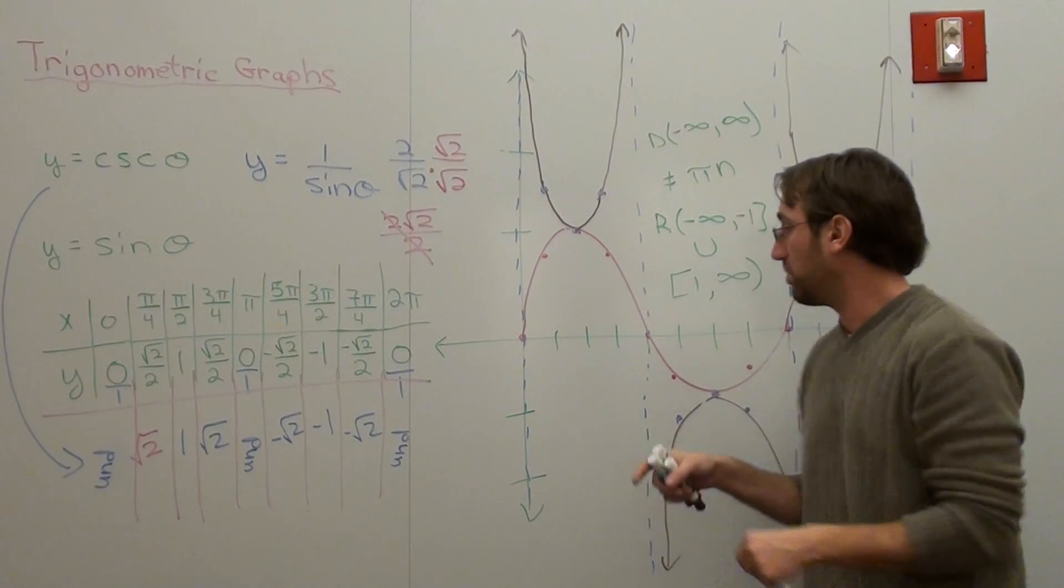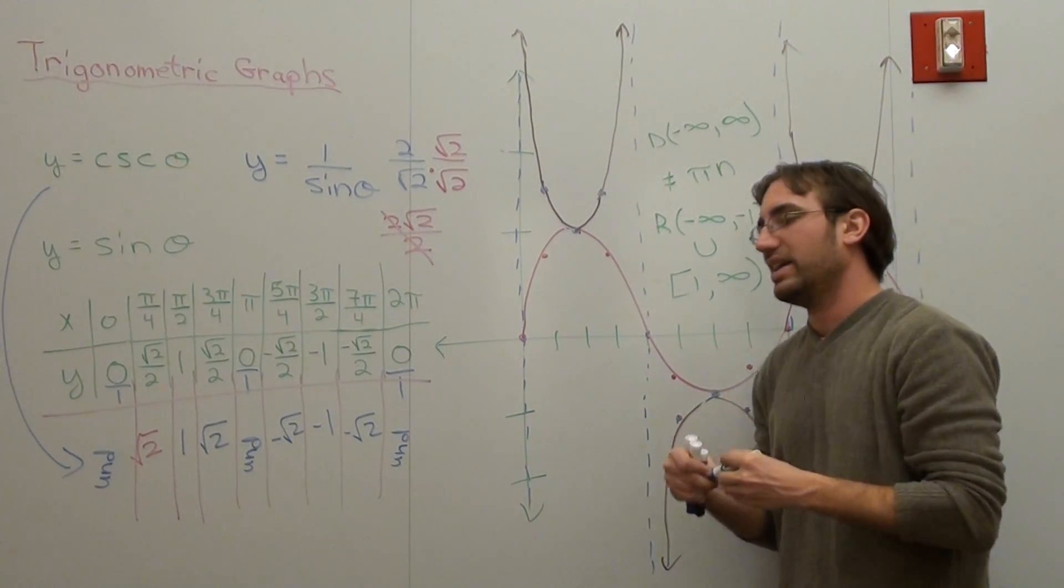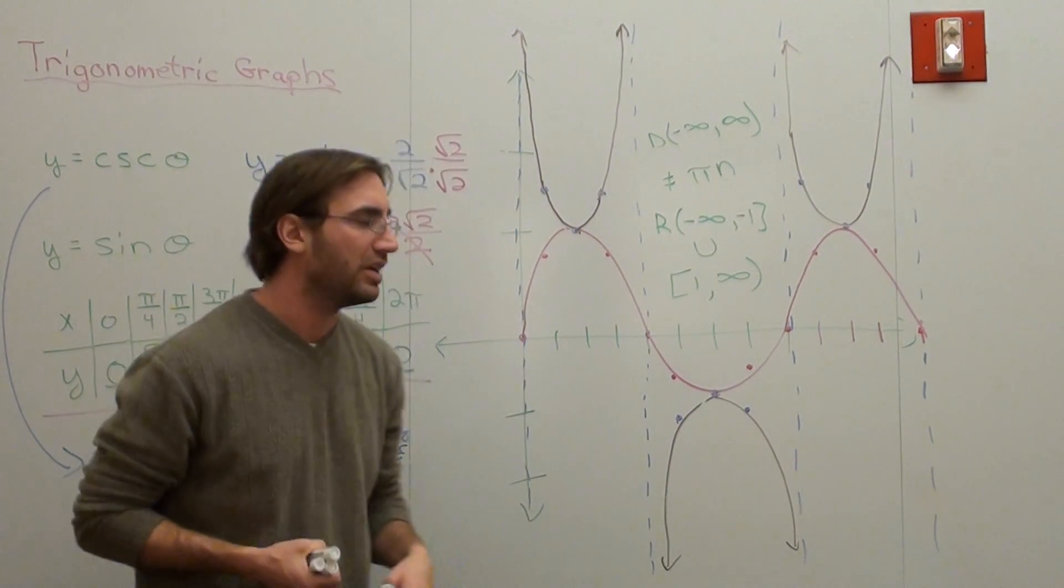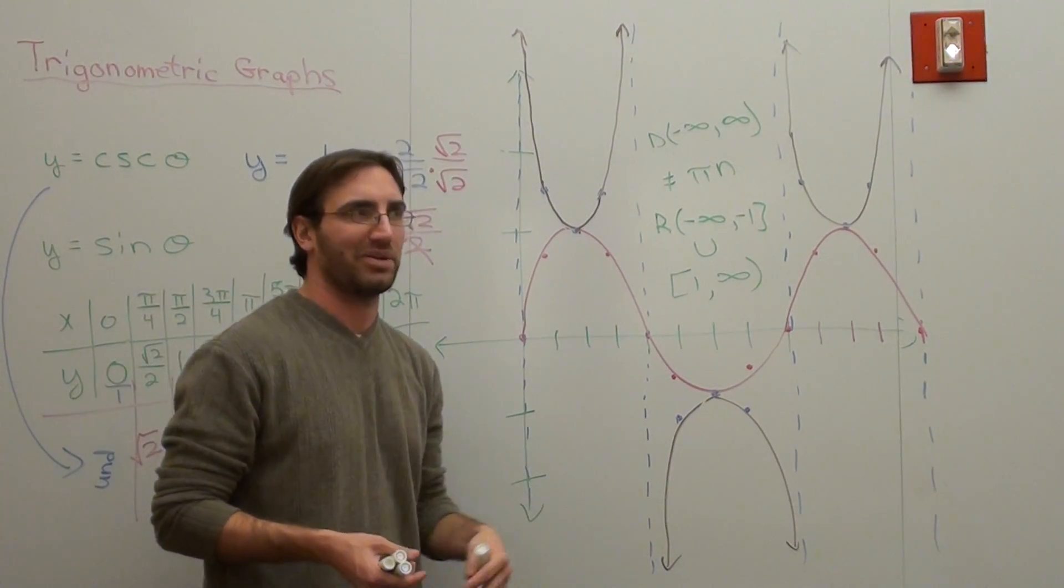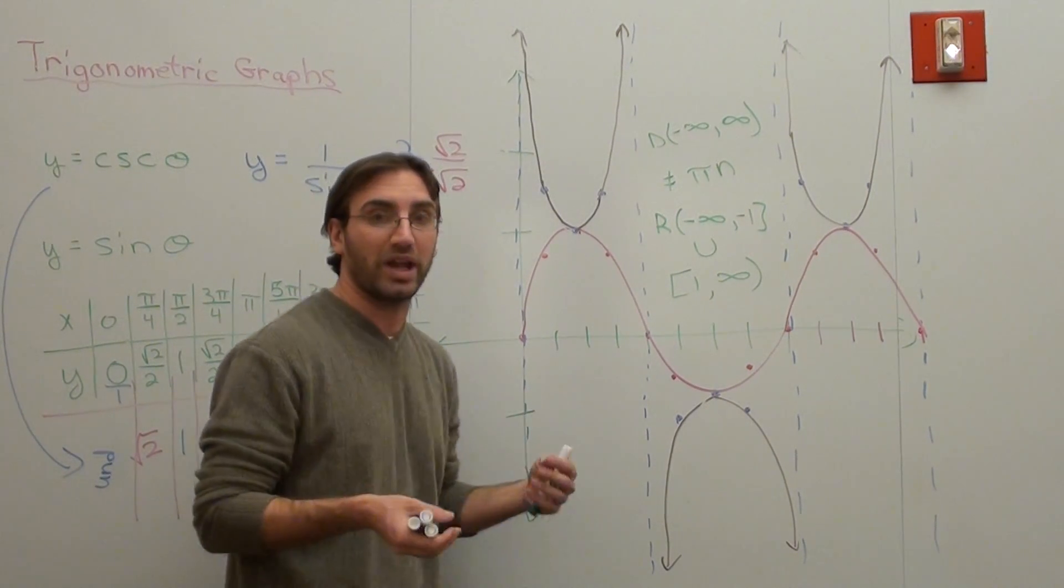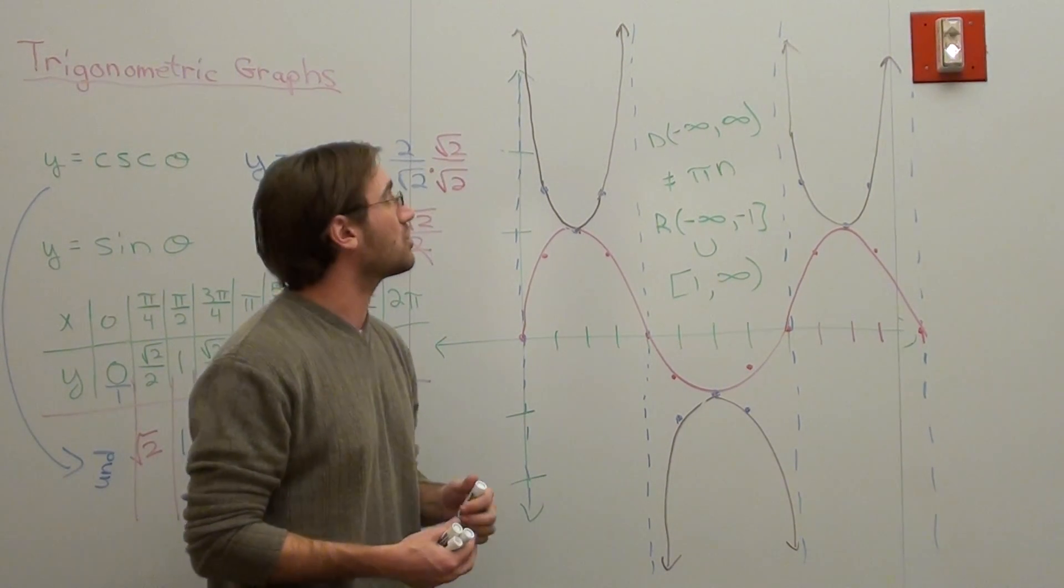If you play around with your amplitude, phase shift, vertical shift, and period, it's not going to really affect your range, but all those other aspects do affect your domain and range - that's a different story. But this is just in terms of the parent function.